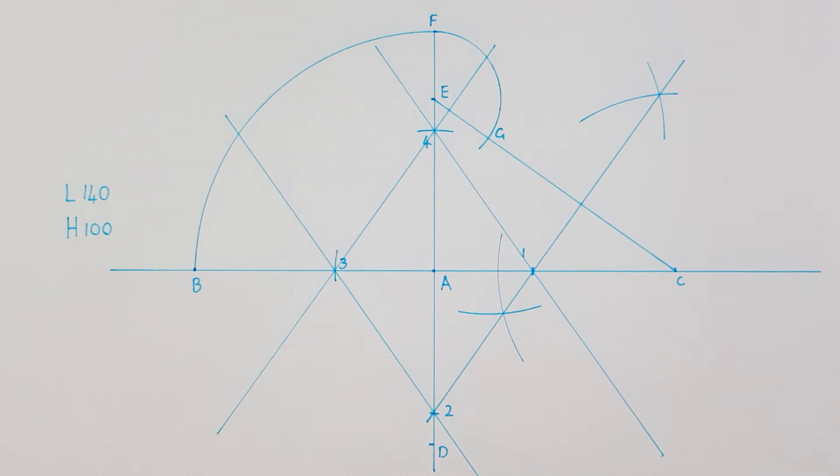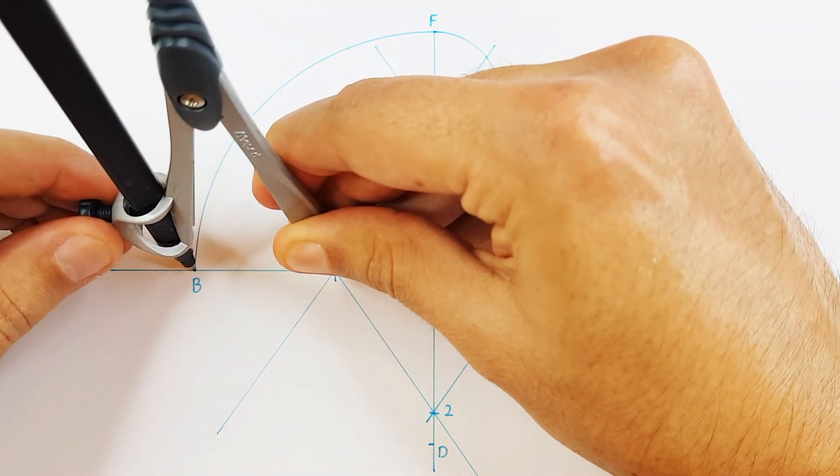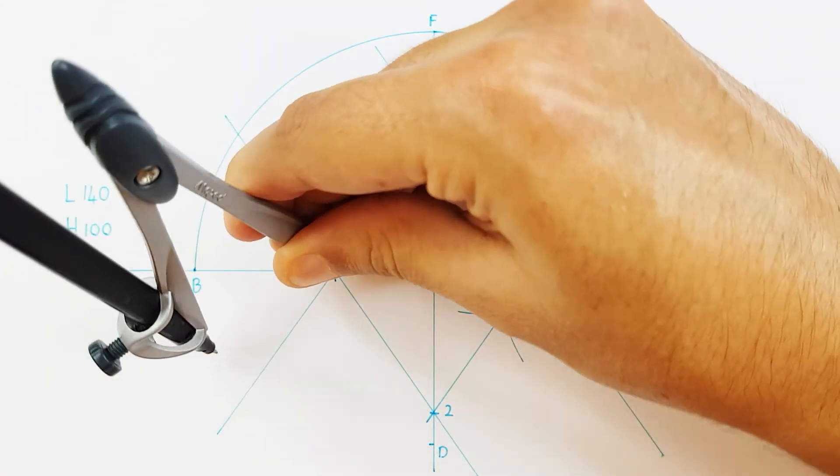Now to actually draw my ellipse, I will place my compass on point 3 and adjust it to point B. This measurement will be used to draw the sides of my ellipse.